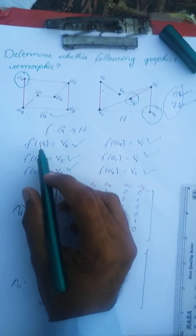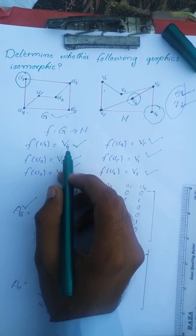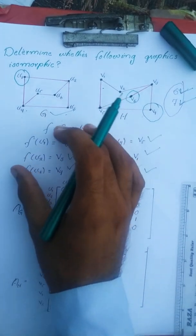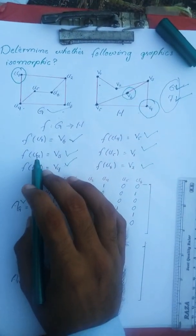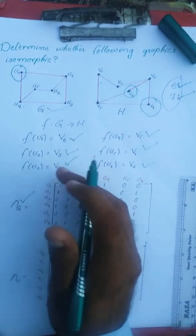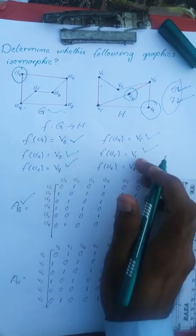We arbitrarily choose f of U1 as V6 and continuing like this way we have set the images of U2, U3 and so on V3, V4 and like this.